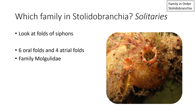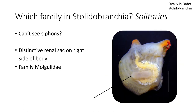If you have an organism with six oral folds and four atrial folds, you have Family Mogulidae. If you can't see the siphons, or if you want to look at an internal characteristic, in the Mogulidae there is a distinctive, fairly large renal sac on the right side of the body. No other ascidians have this renal sac, so this can be a pretty helpful characteristic. You need to take the animal out of its tunic to be able to see this.